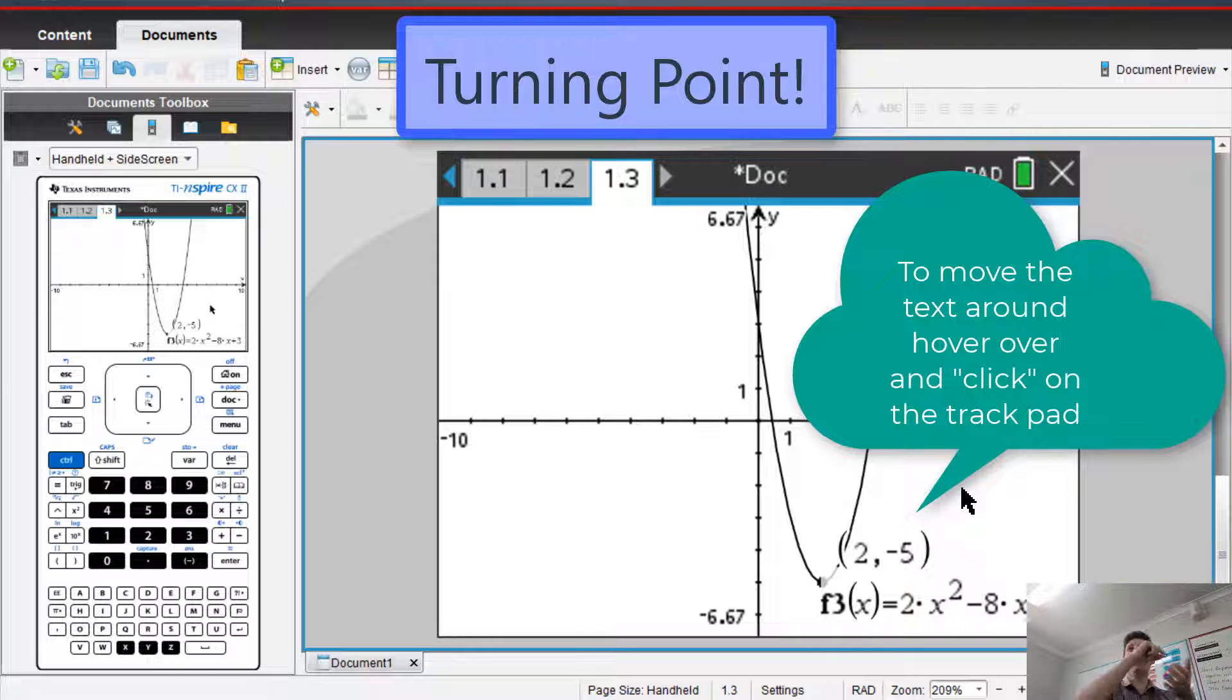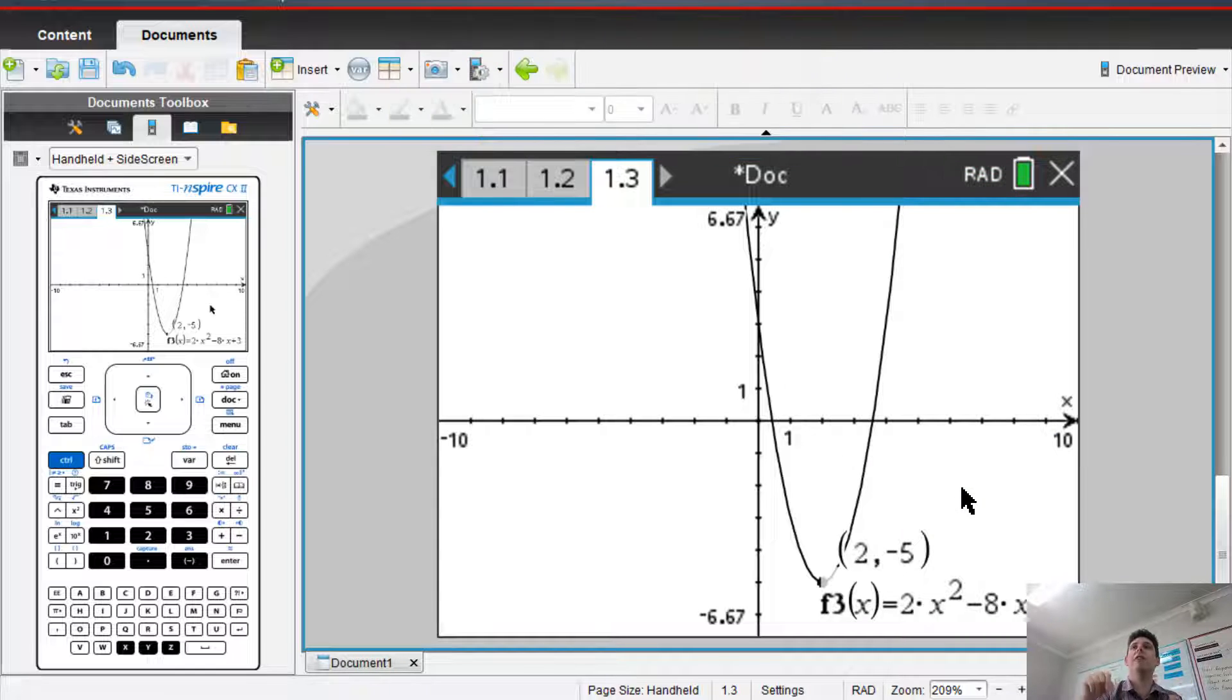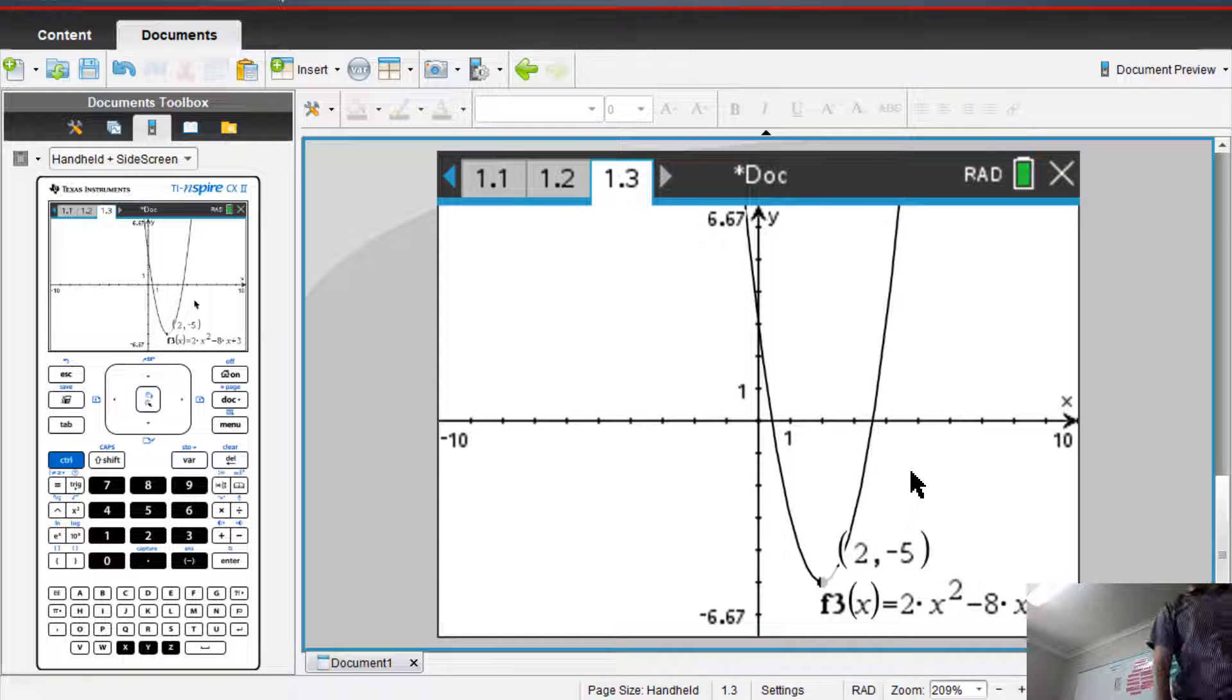So then you would draw that on your graph. 2, negative 5. All right. We've got our turning point.